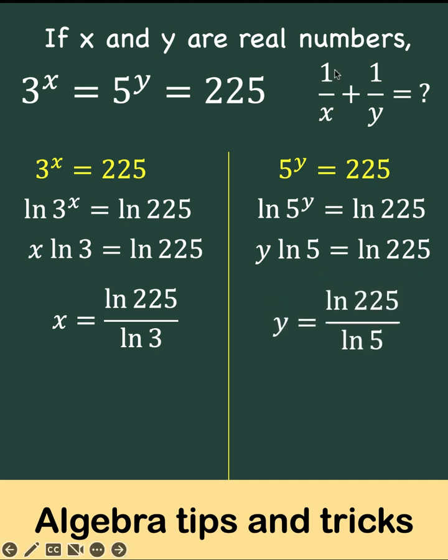Then notice that we are looking for 1 over x plus 1 over y. So that means we can get the reciprocal of x, and that is 1 over x, equals the reciprocal of the right side of this equation, which is ln of 3 over ln of 225.